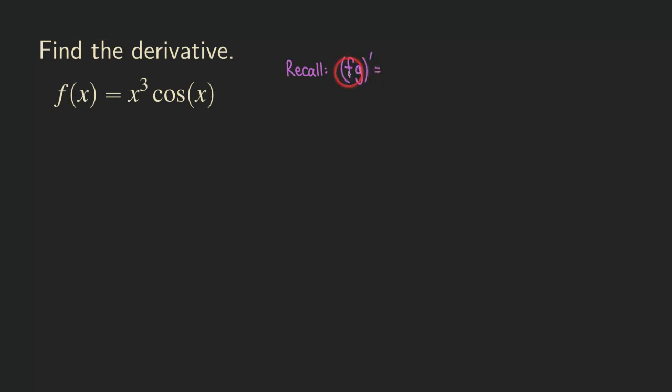If there is a third function, then we'll say first function, second function, third function. But right now, because there are only two functions, we would just have a product of two functions.